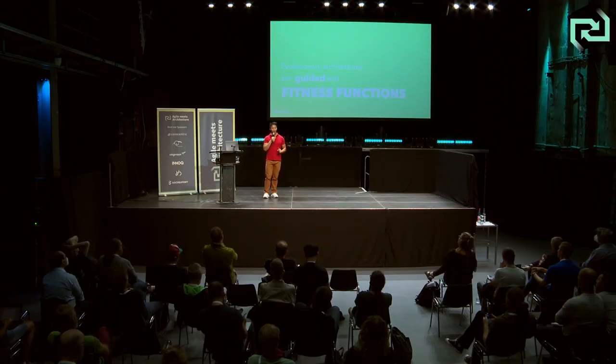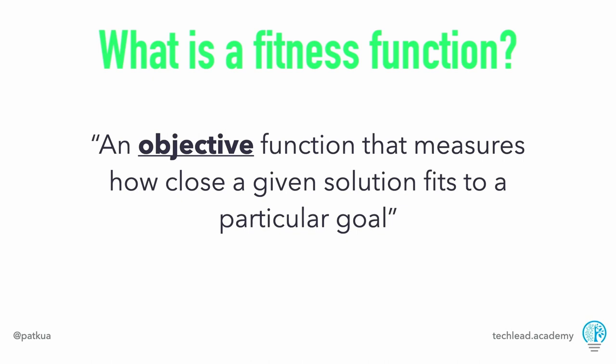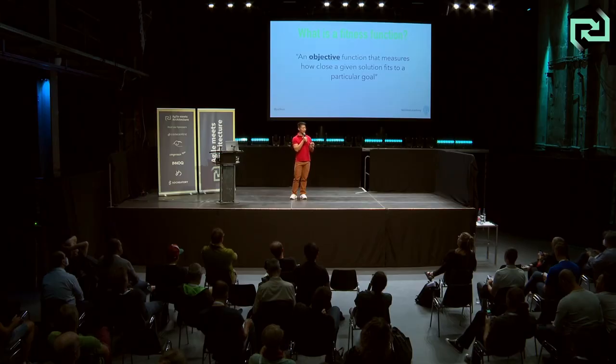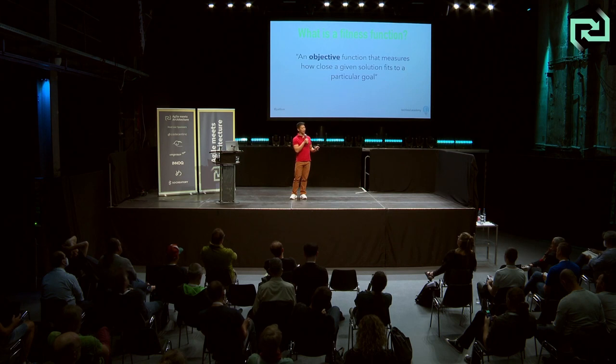A fitness function is simply an objective function that measures how close a given solution fits a particular goal. That's it. Applied to software, if you think about the system you're building, you're trying to define what we mean by 'good architecture' for a particular aspect. How do we come back to an objective measure? Yesterday Rebecca talked about maintainability — maintainability as a word isn't objective. We all have a sense of what's maintainable, but it's hard to measure. The hard part is quantifying in some objective measure what good looks like.